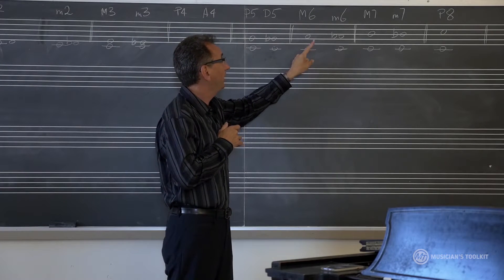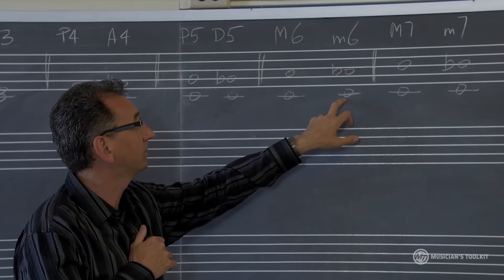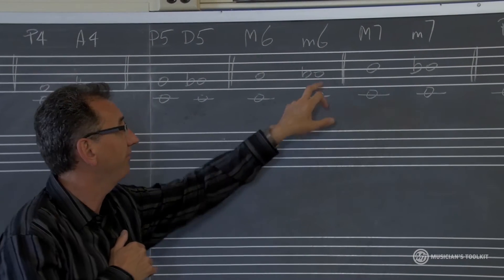Major sixth, C to A, has nine semitones, and minor sixth has eight semitones, C to A flat.